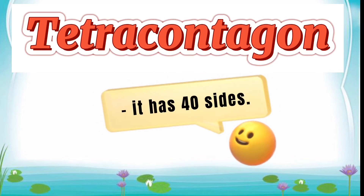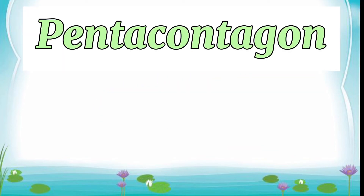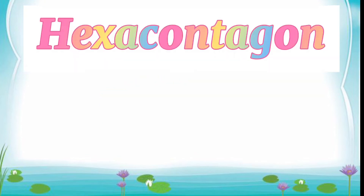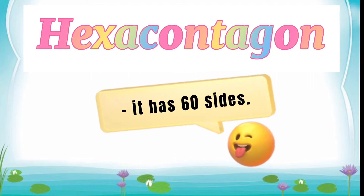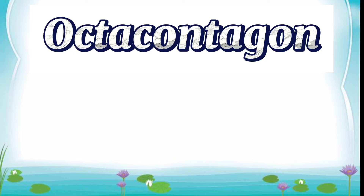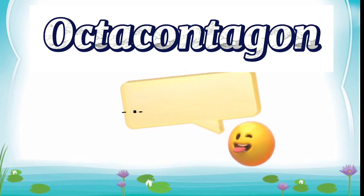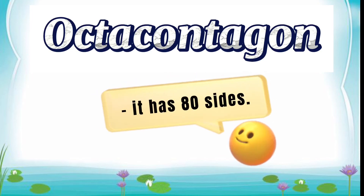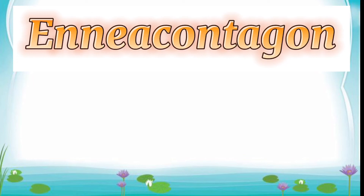Tetracontagon — it has forty sides. Pentacontagon — it has fifty sides. Hexacontagon — it has sixty sides. Heptacontagon — it has seventy sides. Octacontagon — it has eighty sides. Eneacontagon — it has ninety sides.